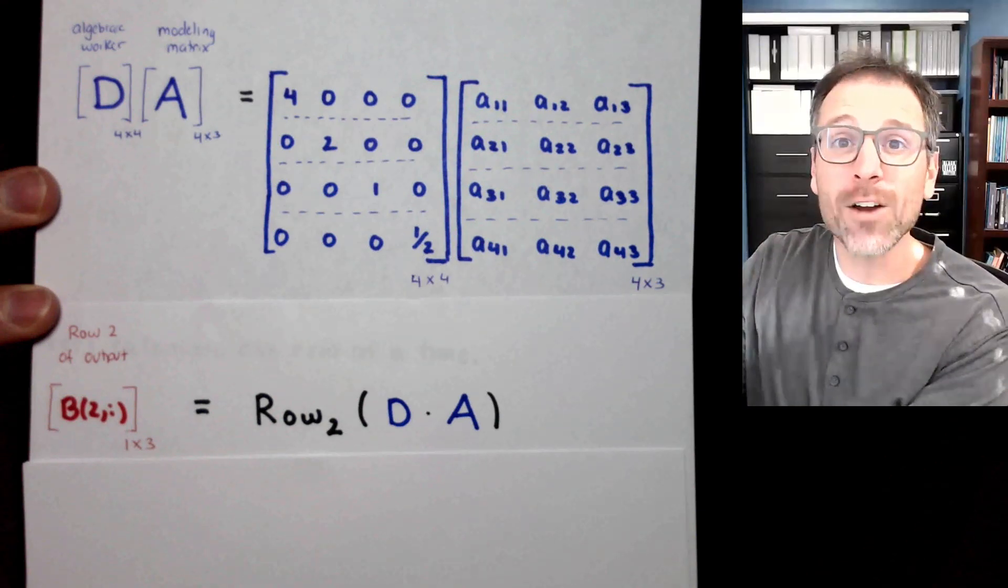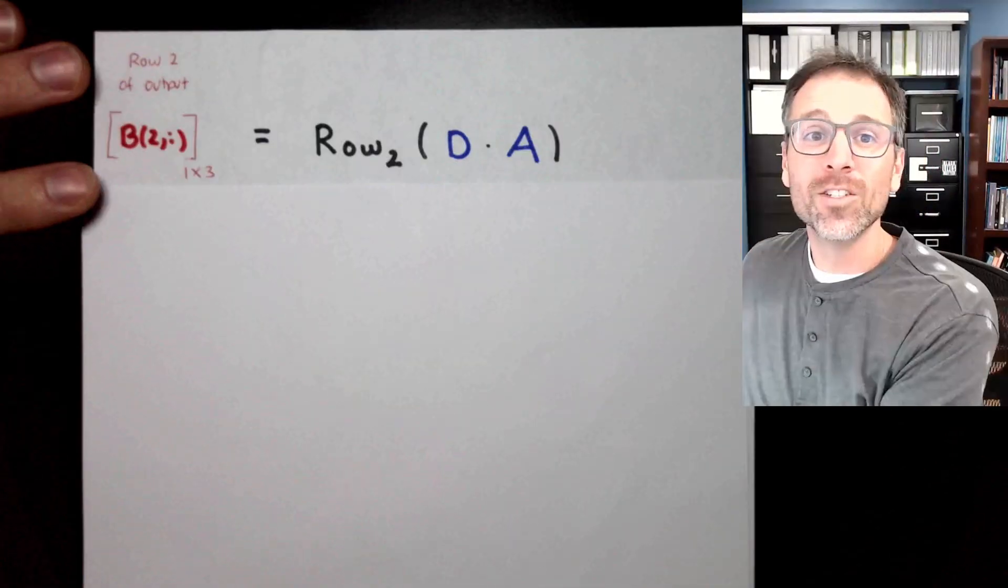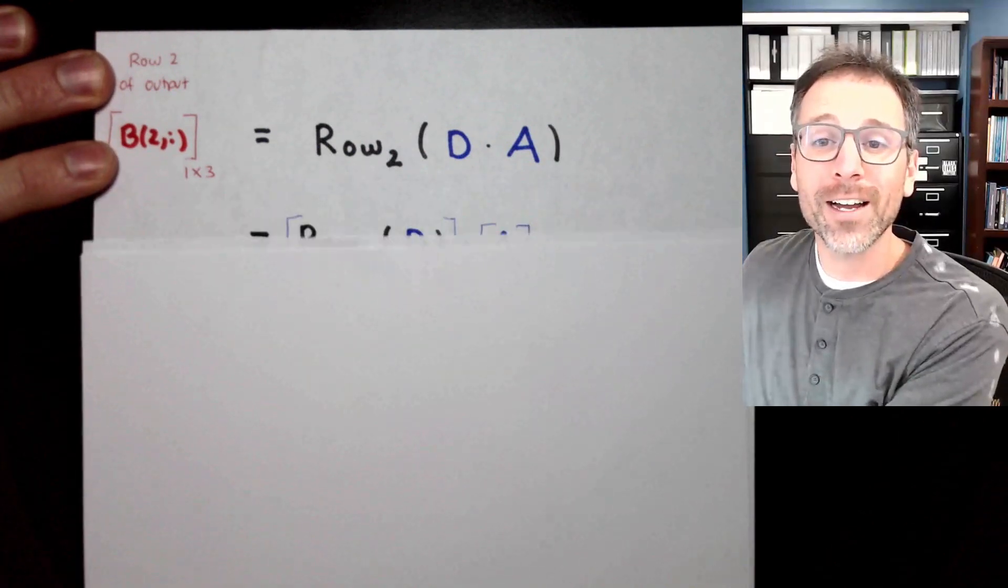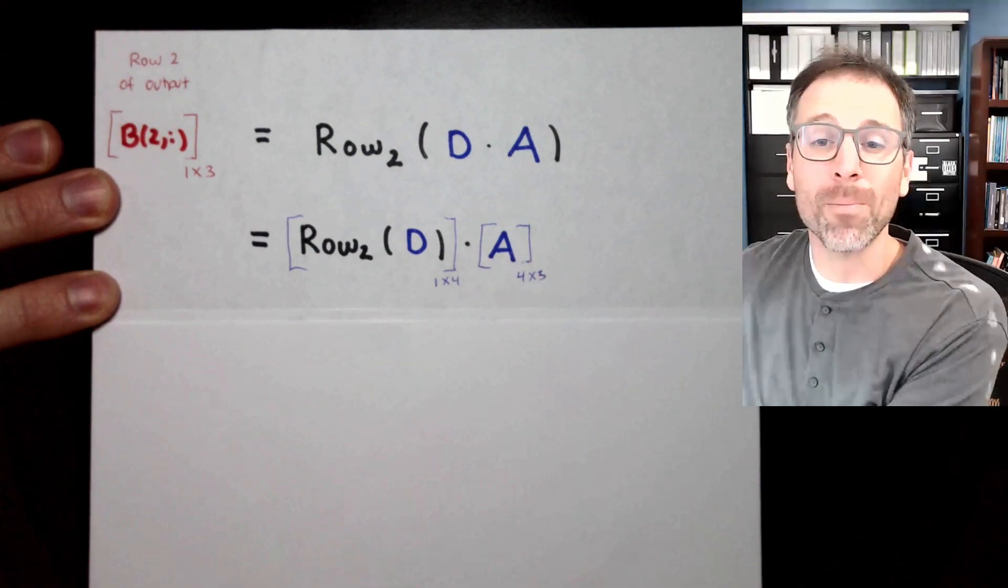You, of course, could then unpause and correct any errors that you make. That would be a great way of getting feedback. If you're not ready for that, let's keep working. So here we go. Row 2 of our product is going to be row 2 of the left matrix multiplied by the entire right matrix, which is our modeling matrix.